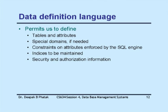Data definition language permits us to define tables and attributes. It permits us to define special domains. A domain defines the type of values in a set — for example, domain of hostel numbers at IIT Bombay would be 1 through 13, not 15. Domain of grades would contain AA, AB, BB, BC, CC, CD, DD, FF, and valid grades — PQ would not be a valid string in that domain.